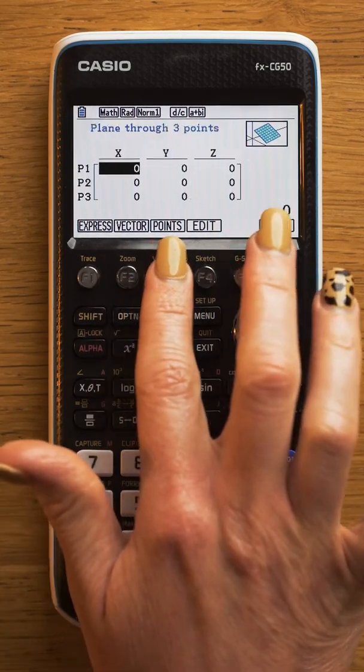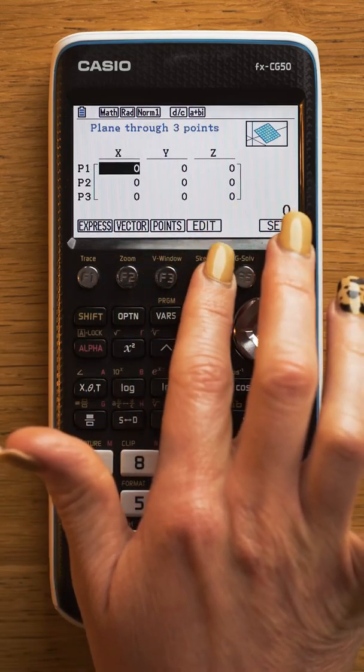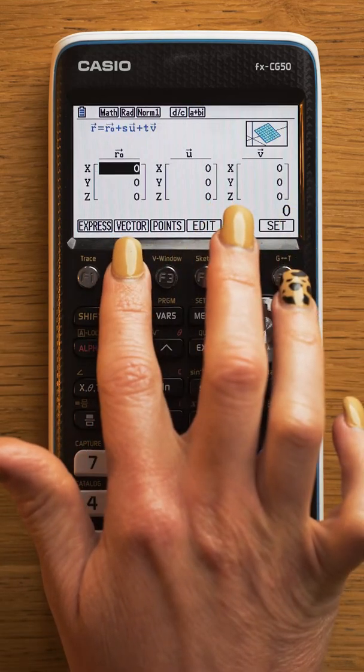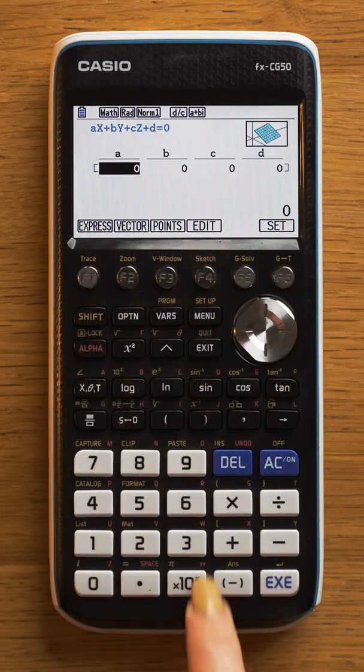I've got different forms that I can express in depending on the information I've been given. So I've got three points, a point and two vectors, or I've got the Cartesian form.